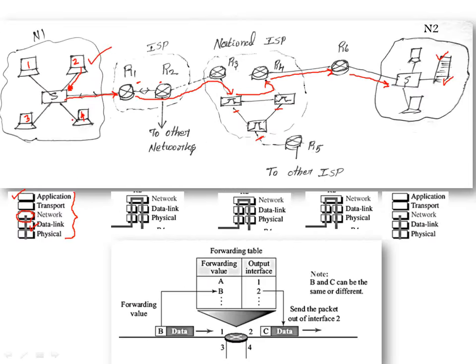From the TCP/IP protocol perspective, when data is transmitted from system 2 in network 1, it travels from the application layer down through transport, network, data link, and physical layers, and the packet reaches router R1. When a router is transmitting a packet, only the first three layers play the role. Though upper layers are required for control purposes, when a router is only transmitting a packet, only the first three layers are used.